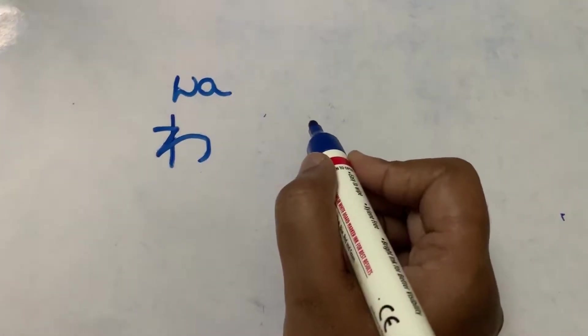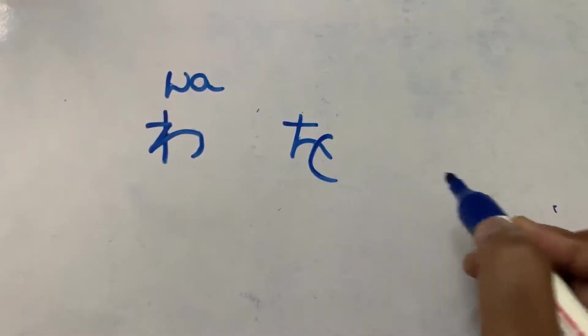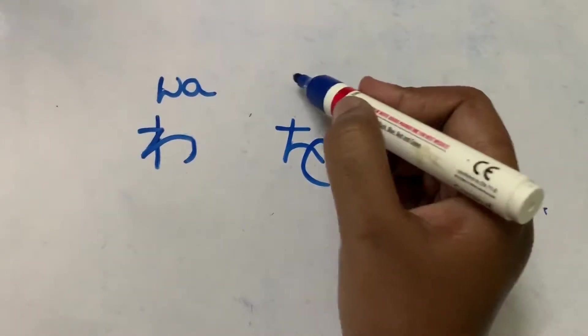And next hiragana wo. The first stroke, the second stroke and the third stroke. This is hiragana wo.